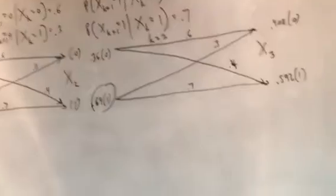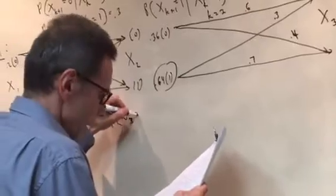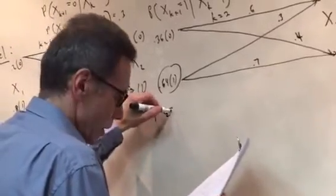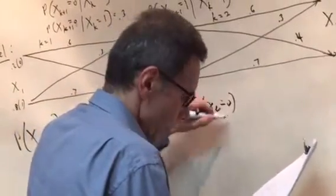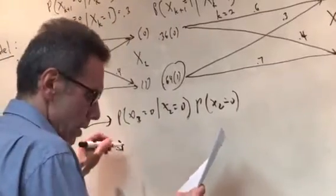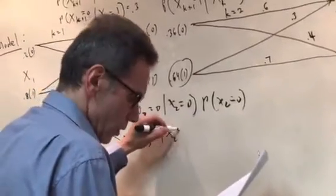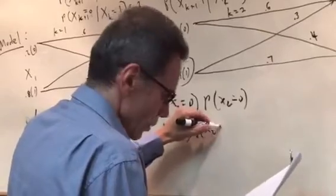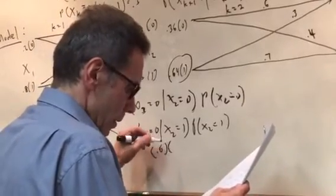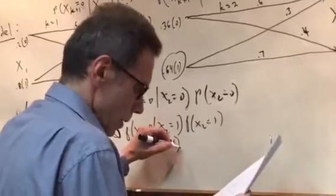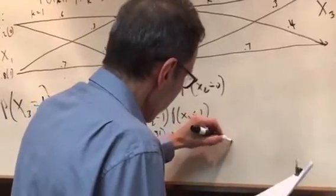That being said, we're going to have probability x3 equals 0 given x2 equals 0, times the probability x2 equals 0. That's one condition. The other condition is probability of x3 equals 0 given x2 equals 1, times the probability of x2 equals 1. This is going to equal 0.6 times 0.36 plus 0.3 times 0.64, and that's going to equal 0.408. What is that? That's probability of x3 equals 0.